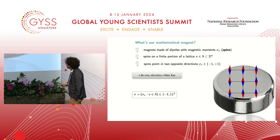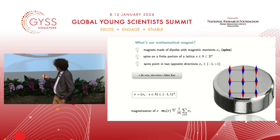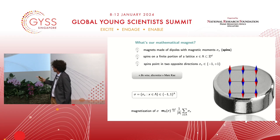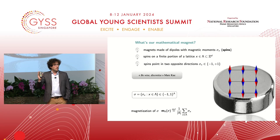Now I want to measure the average magnetization — kind of the average attraction force — and I'll measure it by averaging the spin σ_x over all vertices. If all magnets point up, you get plus one. If roughly half point up and half point down, you get roughly zero.